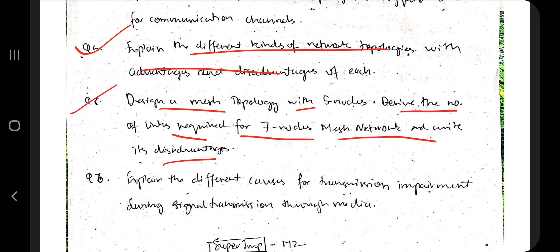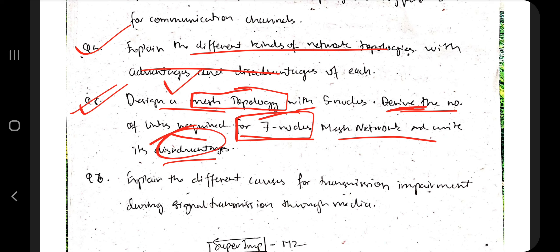The next question is: Define mesh topology, derive the number of links for a seven-node mesh network, and write its disadvantages. First write about topology in general, then define mesh topology specifically — why it is used, which applications it suits, and its advantages and disadvantages. Then derive the formula for the number of links, shown with a diagram. The derivation for seven nodes and five nodes is asked in many question papers, so make sure you know it well. Write the advantages first, then after the derivation, write the disadvantages.